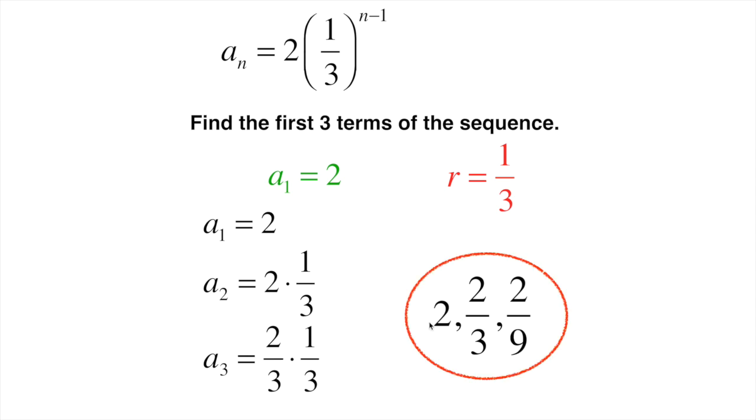So basically you just take the first term, multiply that by the ratio, that gives you your second term. Multiply that by the ratio, that gives you your third term, and you keep going as far as you want, but this one only asks for the first three terms so we'll stop right there.